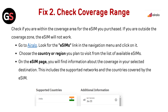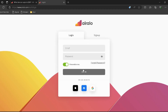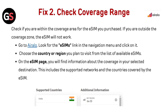Out of Coverage Range: check if you are within the coverage area for the eSIM you purchased. If you are outside the coverage zone, the eSIM will not work. Go to AirLo — the link is provided in the description. Look for the eSIMs link in the navigation menu and click on it. Choose the country or region you plan to visit from the list of available SIMs. On the eSIM page, you will find information about the coverage in your selected destination, including the supported networks and countries covered.